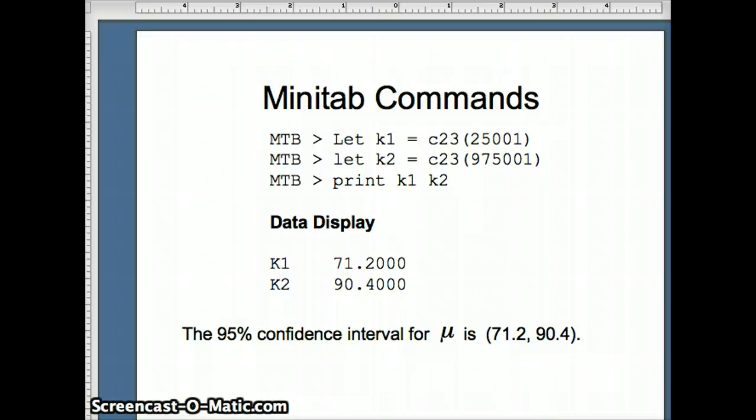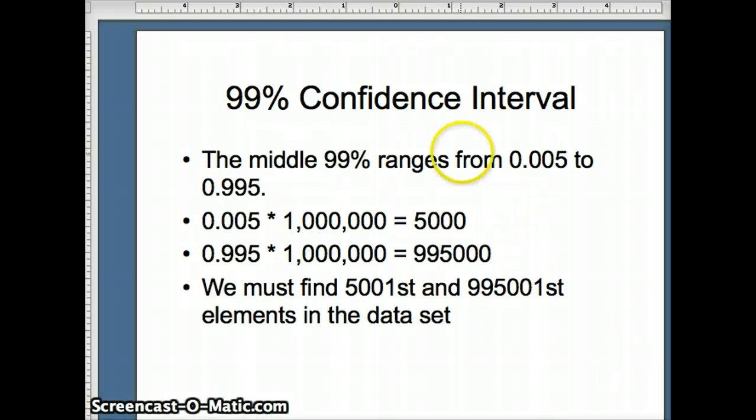Now, we already have the data for the 95 percentile. So it wouldn't be very difficult for us to go ahead and compute the 99 percentile, the 99% confidence interval. So if we're looking for the 99% confidence interval, we want the middle 99%. And that would range from the 0.005 to 0.995. So 0.005 times a million is 5,000. 0.995 times a million is 995,000. So we are looking for the 5,001st and the 995,001st elements in our data set. That will be the middle 99% of all of the means that I've constructed.